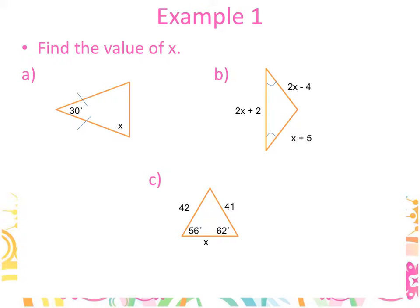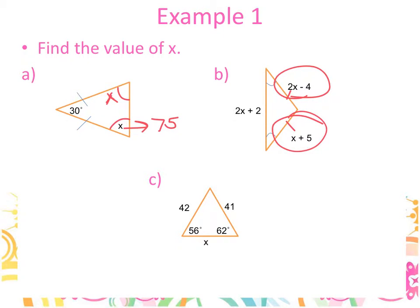Now we apply all that stuff. In part A, you've got two congruent sides, so the base angles will be congruent — both are X. Set up the equation: X plus X plus 30 equals 180. Subtract 30 from 180 to get 150, divide by 2 — X is 75. Part B is the converse: the angles are congruent, so the sides are congruent. Be careful — the biggest mistake is adding the sides and setting them equal to 180. Those are sides, not angles. So 2X minus 4 equals X plus 5, and X equals 9.